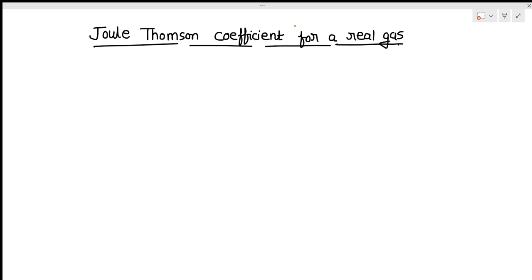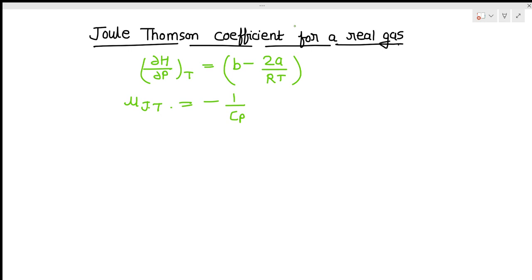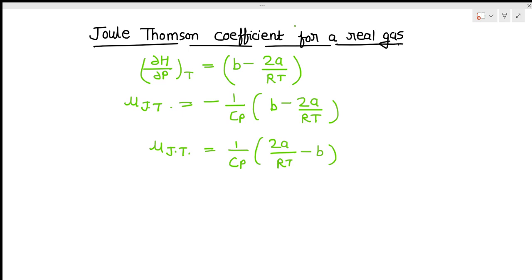Now see the Joule-Thompson coefficient for a Van der Waals gas. For a Van der Waals gas we know that (del H / del P) at constant T is equal to B minus 2A/RT. This we have derived in our previous lectures. So mu_JT = minus (1/Cp) times (B minus 2A/RT), which gives mu_JT = (1/Cp) · (2A/RT minus B). This means for the real gas, the Joule-Thompson coefficient may be positive, negative, or zero, depending on the temperature and pressure of the gas.